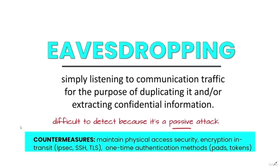Another type of network attack is eavesdropping — simply listening to communication traffic for the purpose of duplicating it and/or extracting confidential information. It is difficult to detect because it is a passive attack. Countermeasures include maintaining physical access security, encryption in transit, and one-time authentication methods.